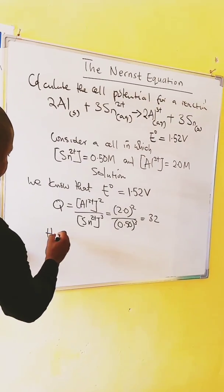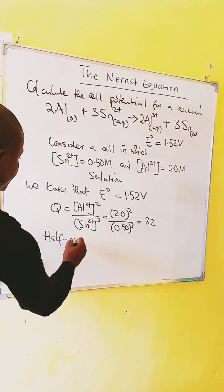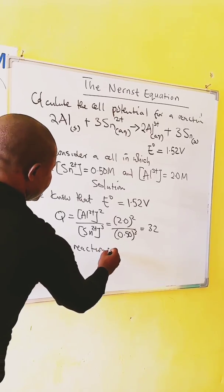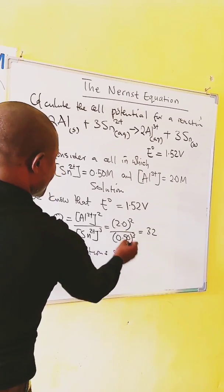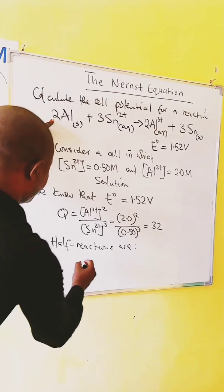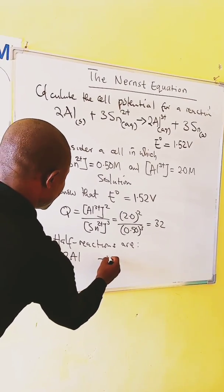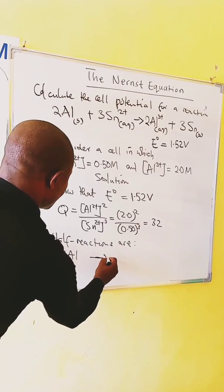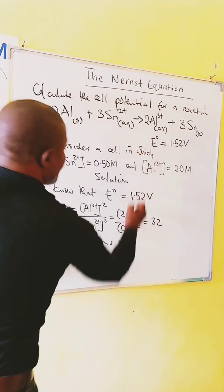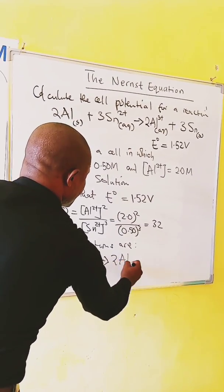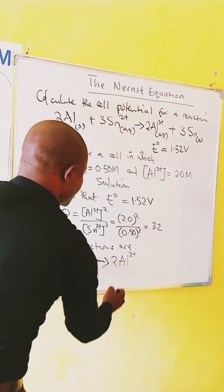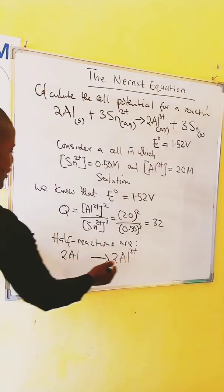So that is our Q. The half reactions are: We have 2 aluminum forming 2 aluminum ion. Then you balance the charge plus 6 electrons.